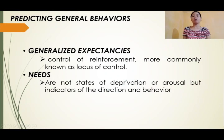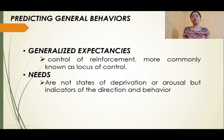Predicting General Behavior. The Basic Prediction Formula is too specific to give clues about how a person will generally behave. To make more generalized predictions of behavior, one must know people's generalized expectancies — their expectations based on similar past experiences that a given behavior will be reinforced. Generalized expectancies include people's needs, that is, behaviors that move them toward a goal.